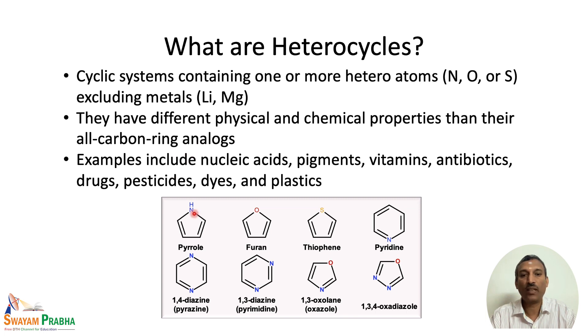Some examples of heterocyclic compounds are present in nucleic acids, pigments, vitamins, antibiotics, drugs, pesticides, dyes, and plastics.